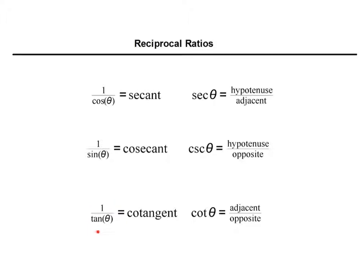And one over tangent is called cotangent, abbreviated COT. And in that case, the adjacent side would be over the opposite side.